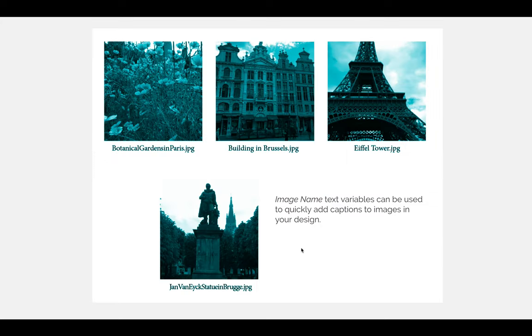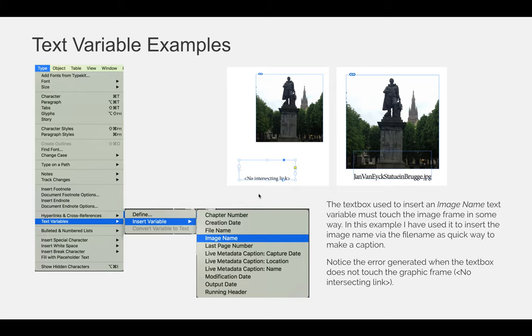Notice here on the left-hand side, I followed the path: type, text variables, insert variable, image name. I also followed the instructions on this slide — I have a text box and my text cursor was blinking. But notice how when the text box is not touching the picture, it just says 'no intersecting link,' meaning there's no photo touching it for it to be able to insert the file name.